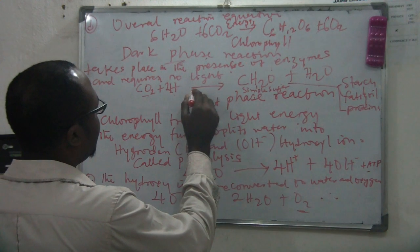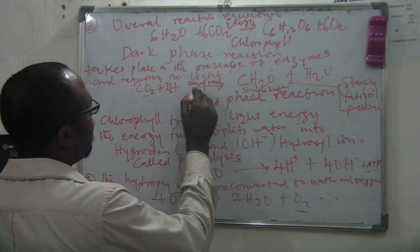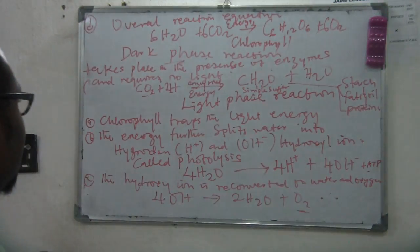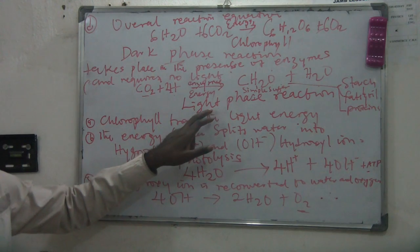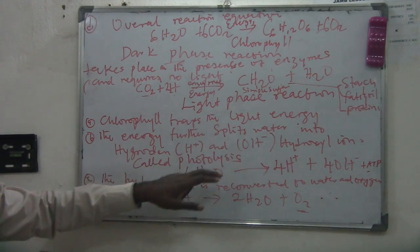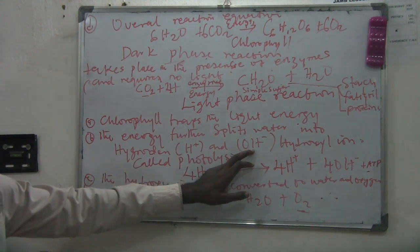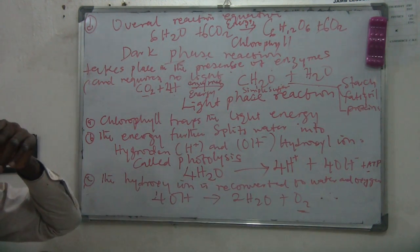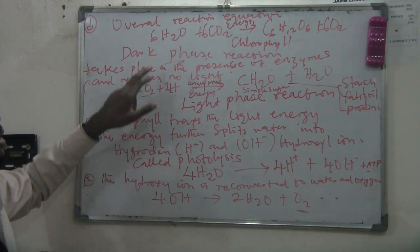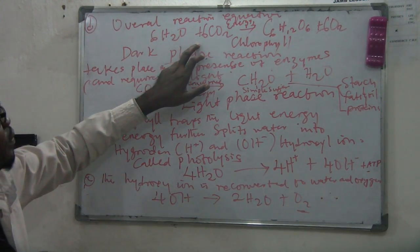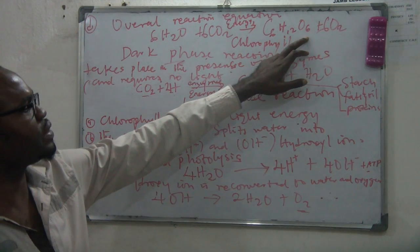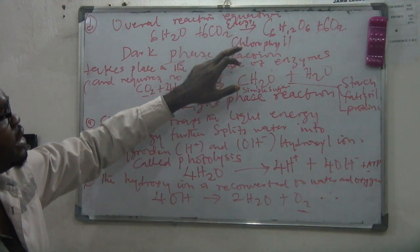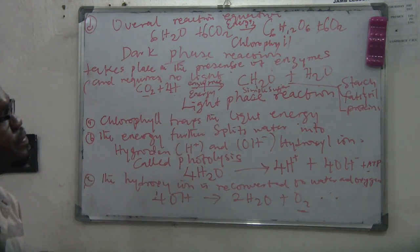The dark phase reaction occurs in the presence of enzyme and energy. So those are the two phases of photosynthesis. The light phase involves the chlorophyll trapping the light, splitting the water molecule into hydrogen and hydroxyl ions. The hydroxyl ion is reconverted to oxygen, ATP is formed, and water reacts with carbon dioxide in the presence of energy and chlorophyll to form glucose and oxygen as a byproduct.